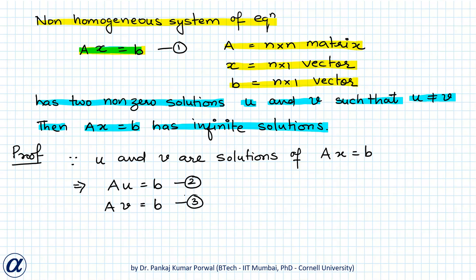Now, if I do equation 2 minus equation 3, this will give me AU minus AV equals 0. Here this 0 represents a zero vector which is of size n by 1. I can write this as A(U minus V) equals 0.